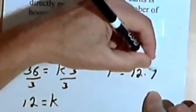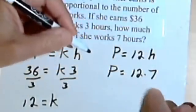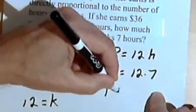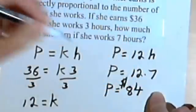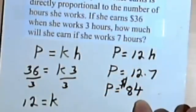Then multiply 12 times 7, and 12 times 7 is 84. And I'll put in a dollar sign. So she earns $84.